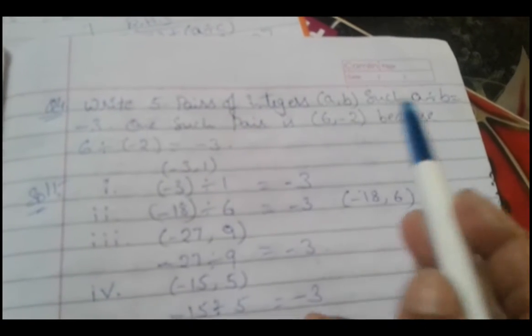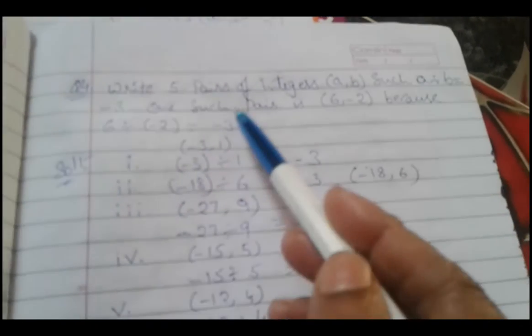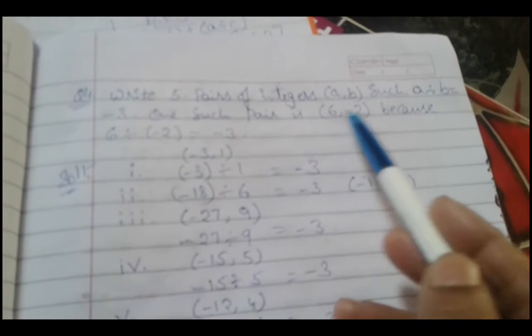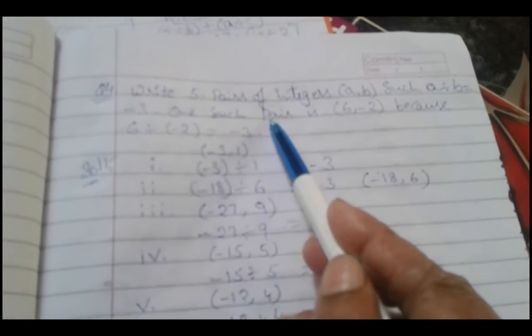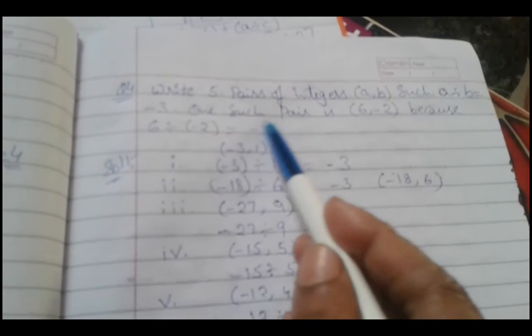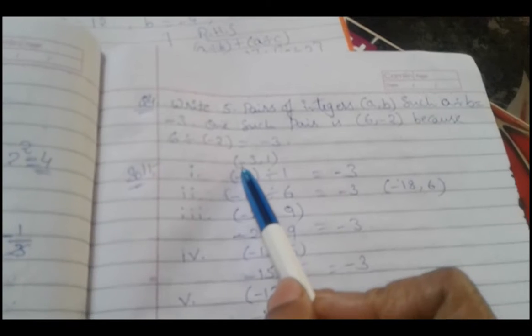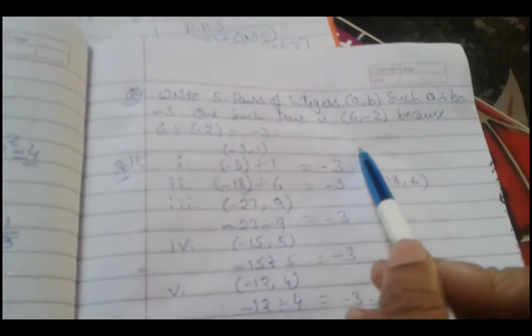In question number four, write five pairs of integers (a, b) such that a divided by b equals minus 3. One such pair is given: (6, minus 2), because 6 divided by minus 2 equals minus 3. We need to find more such pairs — for example, minus 3 divided by 1 also gives minus 3.